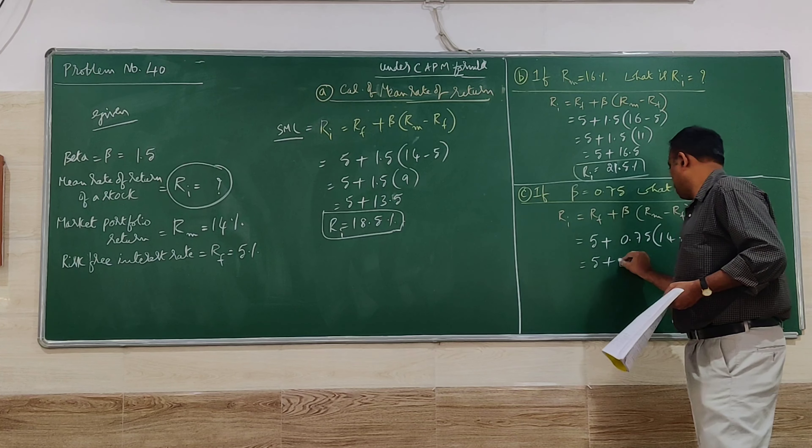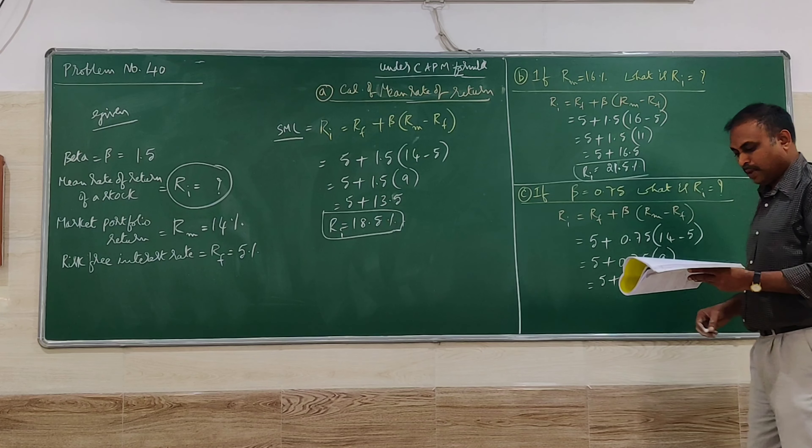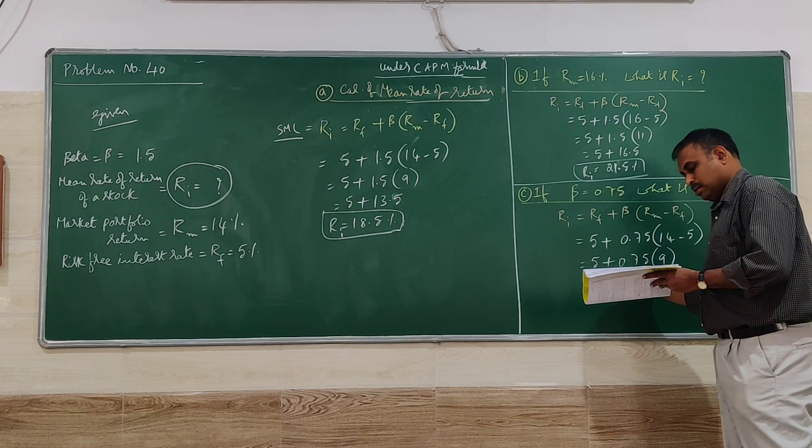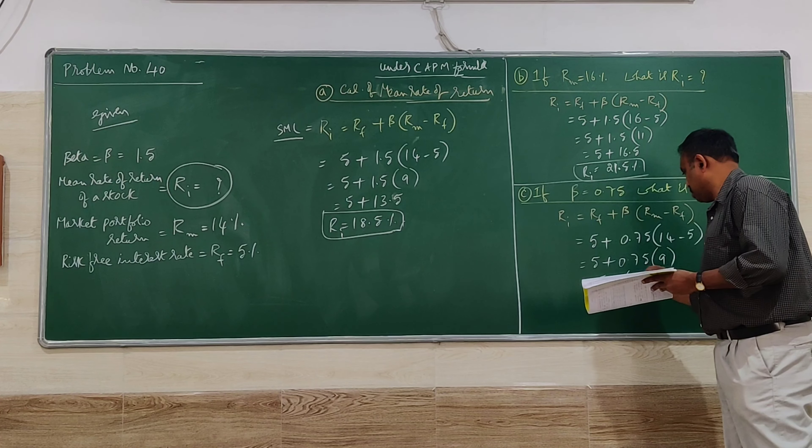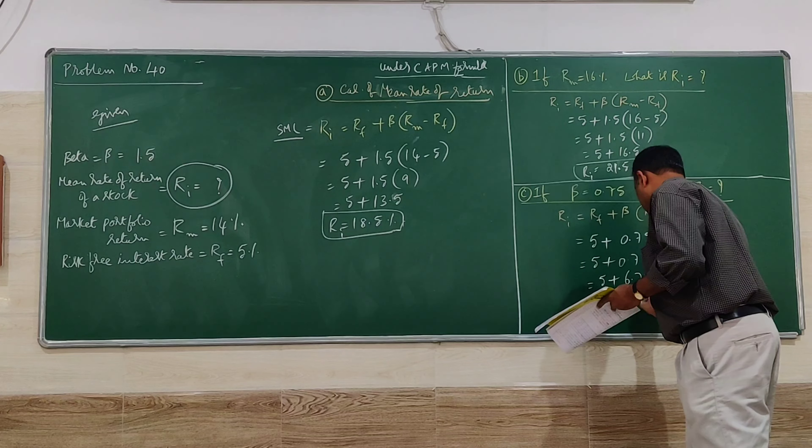14 minus 5 is 9, so RI = 5 + 0.75(9) = 5 + 6.75 = 11.75%.